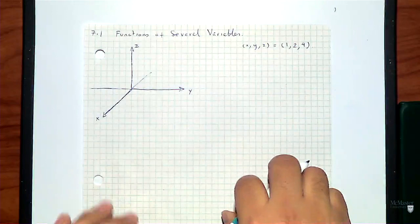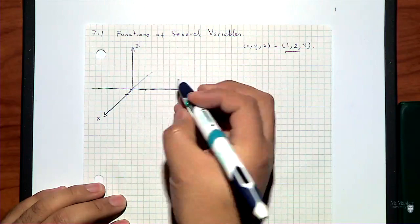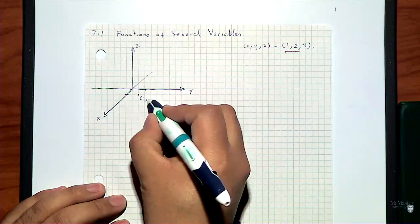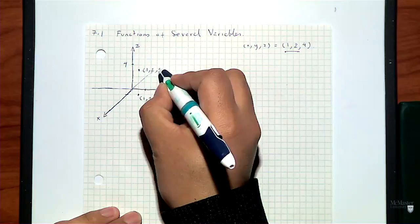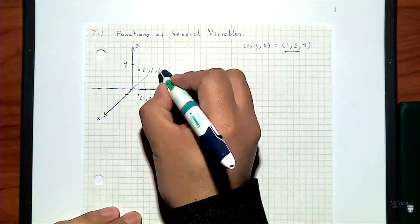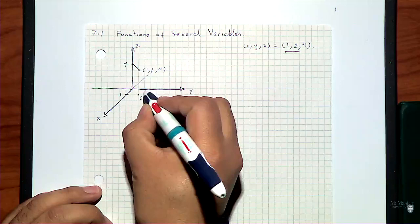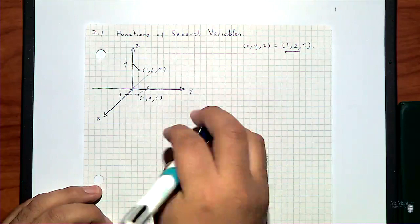You might be used to plotting points in the plane. You know the point 1, 2: this is 1 in the X axis, this is 2 in the Y axis. So in terms of the projection in the horizontal plane, this is the point 1, 2, 0. The only thing I need to add is basically a height of 4 to have the point 1, 2, 4. So if you draw a perpendicular passing through the Z axis over this point, this would be coordinate 1 in X and 2 in Y — the projection in the XY plane is 1, 2, 0 — and this is the point 1, 2, 4.